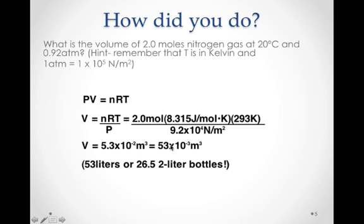If we put that in, if we make that 53 times 10 to the negative 3 meters cubed, then this allows us to see that this is really 53 liters, since one liter is 1 times 10 to the negative 3 meters cubed, or 1 1,000th of a meters cubed. We can see that this volume is quite large, 53 liters, or 26 and a half 2 liter bottles. Quite a big volume.